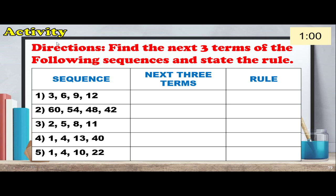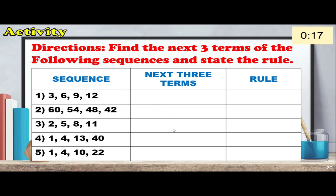Activity time — you have 1 minute. Find the next three terms and state the rule for each sequence: (1) 3, 6, 9, 12; (2) 64, 54, 48, 42; (3) 2, 5, 8, 11; (4) 1, 4, 13, 40; (5) 1, 4, 10, 22. You may type your answers in the comment section below.